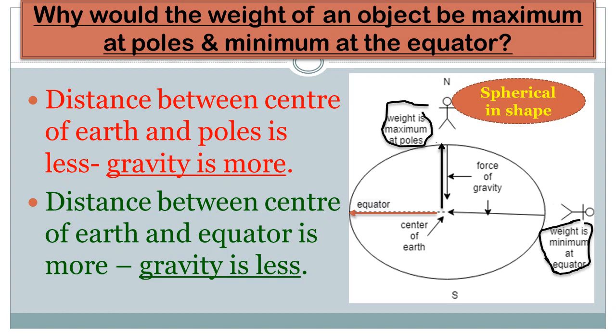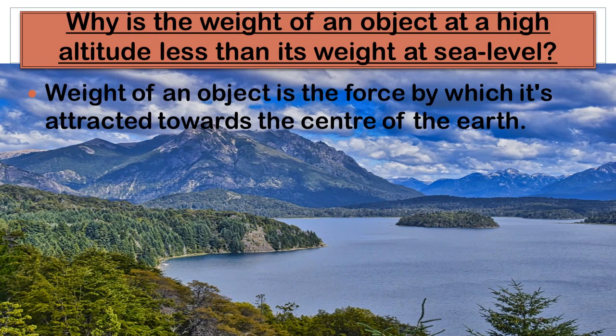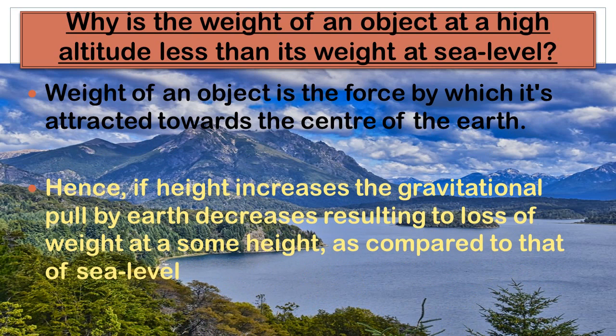Why is the weight of an object at high altitude less than its weight at sea level? Weight is the gravitational force acting on an object. As height increases — as we go above sea level to higher altitude — the distance between the center of the earth and the object increases. As distance increases, gravitational force becomes less, and so weight is minimum at higher altitudes.